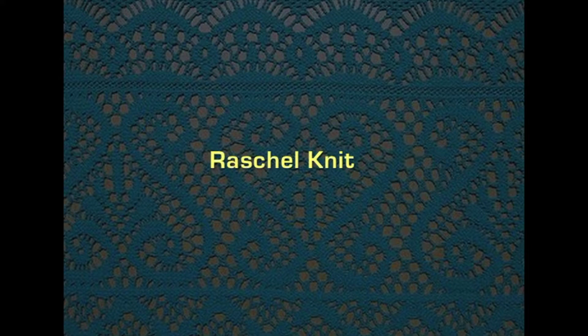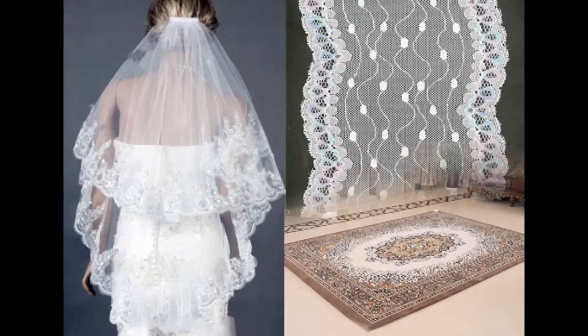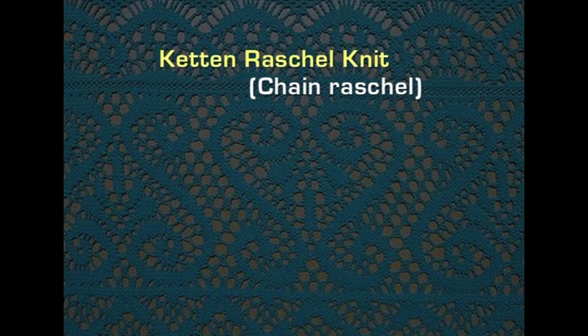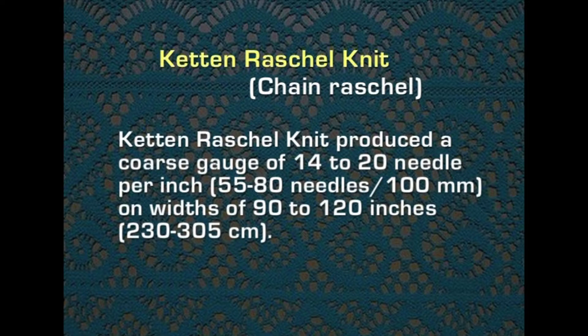Rachel knit is another type of warp knitting. The rachel knit ranks in importance of production with tricot, but surpasses it in variety of products, which range from baling and laces to power nets for foundation garments to pile fabrics such as carpets. Keten rachel knit, also called chain rachel, is a variation of tricot knit that produces a coarse gauge of 14 to 20 needles per inch (55 to 80 needles per 100 mm) on a width of 90 to 120 inches (230 to 305 centimeters). Since the Keten rachel knit is produced with bare needles, the fabric is finer, has a better hand, superior elasticity and cover.